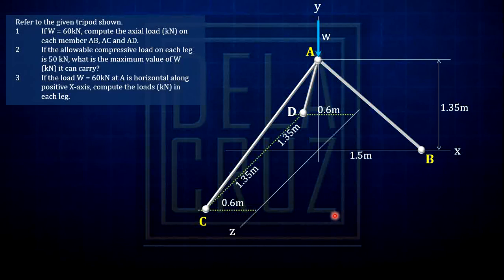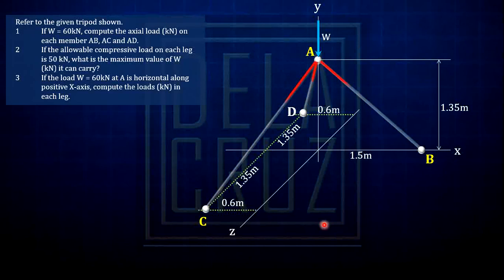So first, what is the analysis here? We can analyze this the same as a truss. We can analyze this as a truss member because the legs are obviously two-force members, pin-supported on each joint, and there are no moments because they are pinned. Now if that is a truss member, we can analyze this by method of joints at point A where the forces are concurrent.